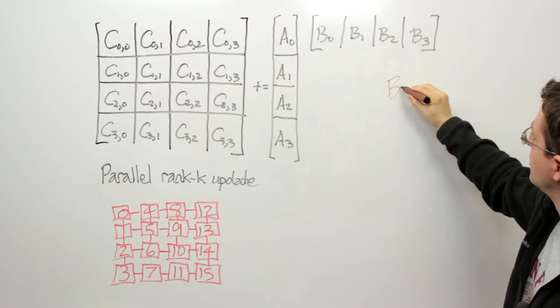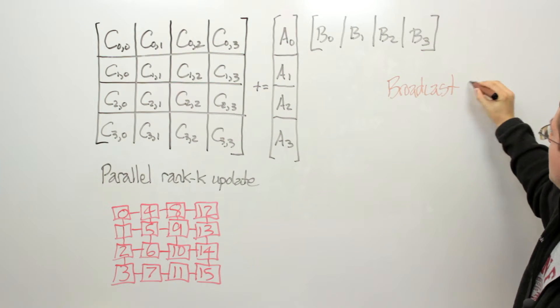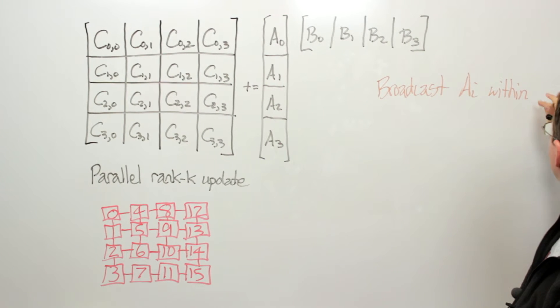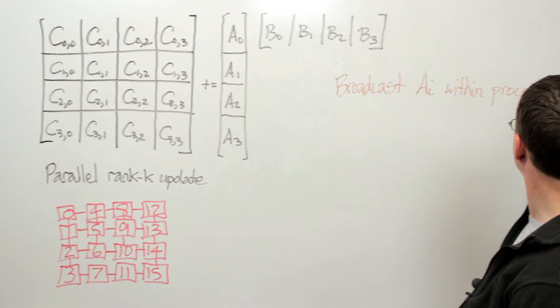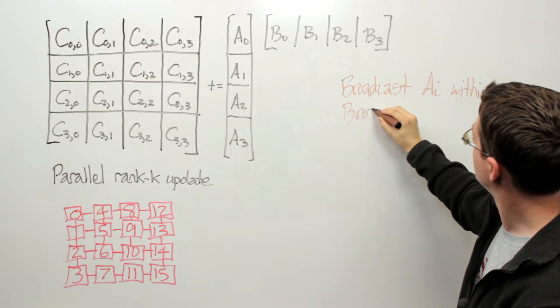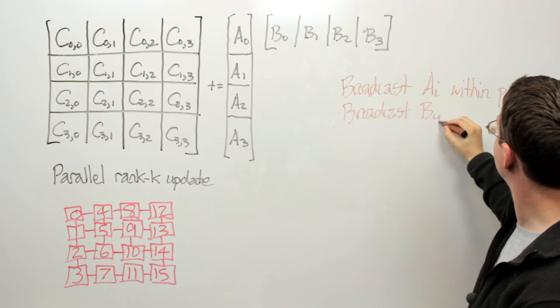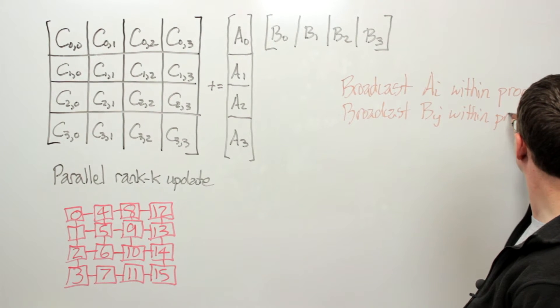We would broadcast A sub i within process row i. And then broadcast B sub j within process column j.